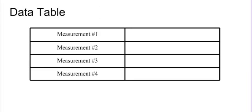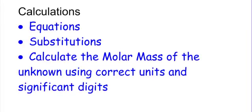Fill out your data table with your four measurements — you have to figure out what those are. Using those measurements, make your calculations. In your calculations section of the lab write-up, show all four equations with substitutions — the numbers, measurements, and values substituted in. At the end, calculate your molar mass of the unknown using correct significant digits and correct units.